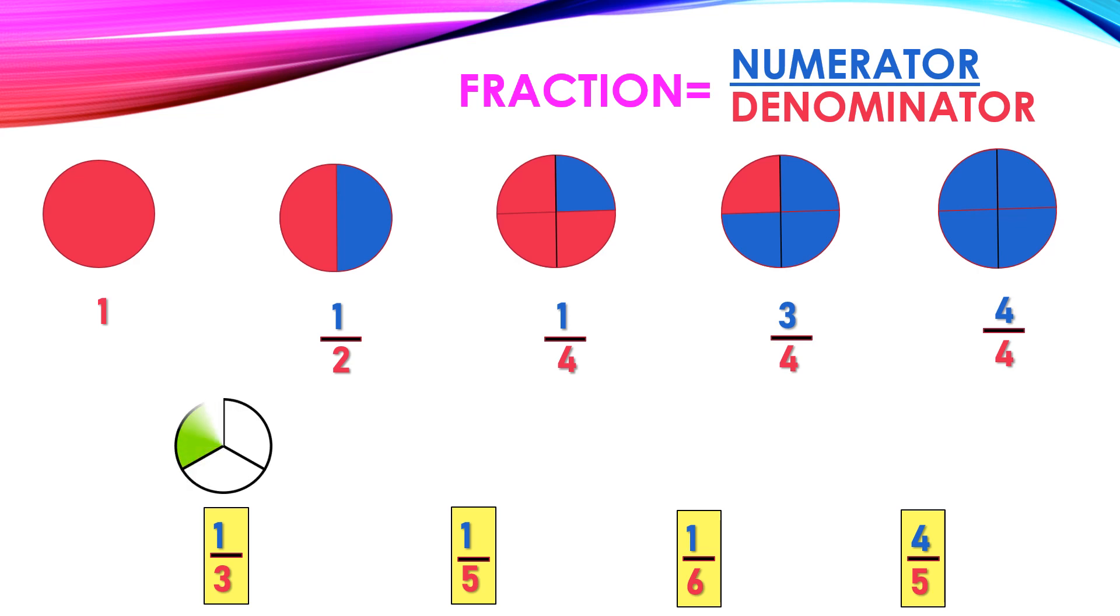Now it's the same round, but three parts are equal to one. So three parts are equal to one. Finally, we have five parts and four parts. Let us move to the next one.